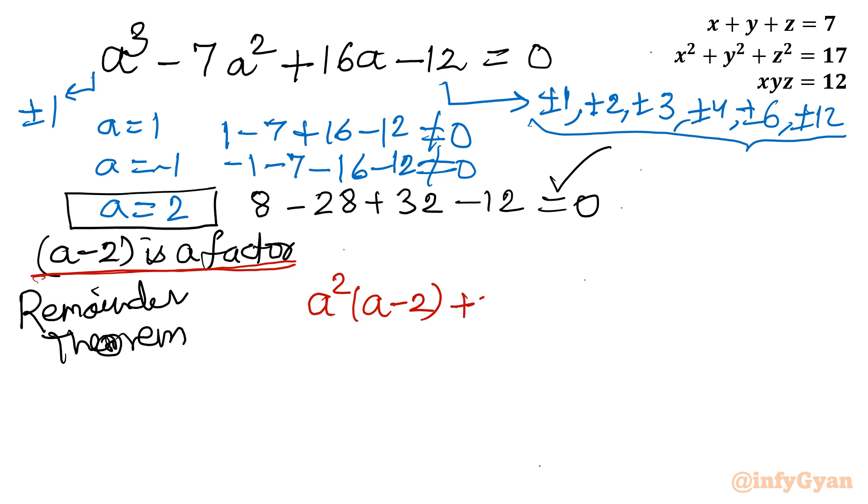Minus 7a square plus 16a minus 12 equal to 0. Same way, here I will be writing it is minus 5a square plus 16a minus 12 equal to 0.